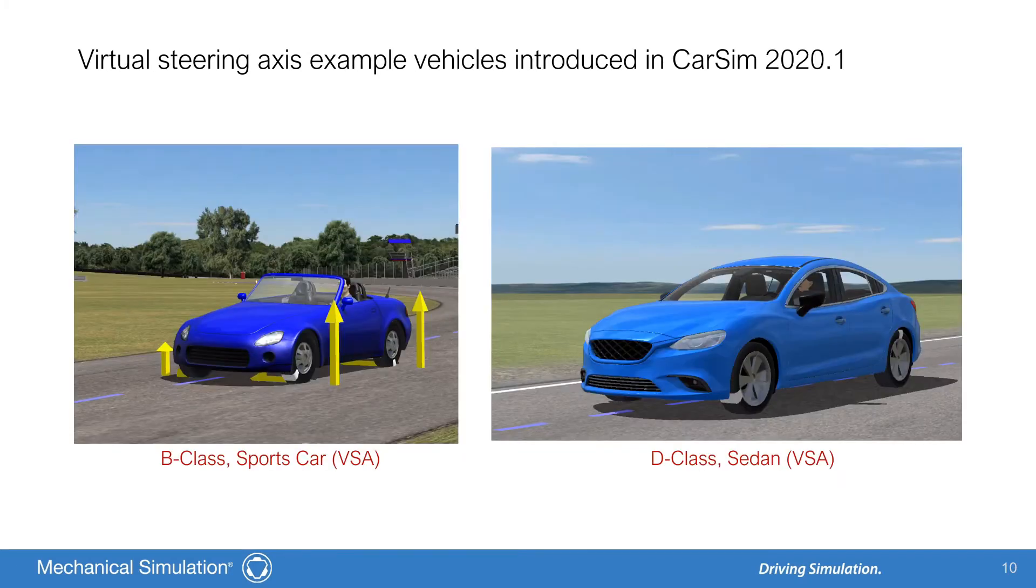Two example vehicles were introduced in CarSim 2020.1 that demonstrate the virtual steering axis module. The B-Class sports car VSA and the D-Class sedan VSA. The front suspension of the sports car was created based on a double ball joint strut model we built in SuspensionSim. The front suspension of the sedan was based on the existing CarSim example sedan.